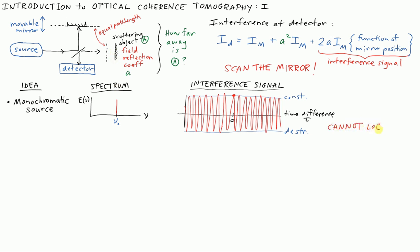What's this signal look like? This interference signal goes as 2AI_M times the cosine of the optical frequency 2π nu_naught times tau. We have a maximum when this argument of cosine is zero, but we also have many other maxima where nu_naught times tau is an integer, so it's an integer number of 2π.